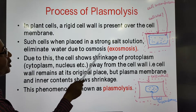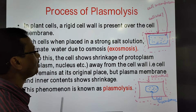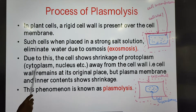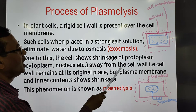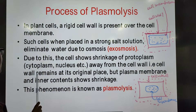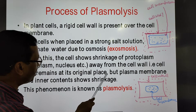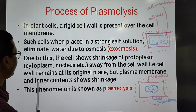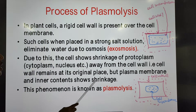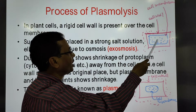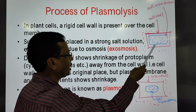Due to this, the cell shows shrinkage of the protoplasm — which includes cytoplasm, nucleus, etc. — away from the cell wall. The cell wall remains at its original place, but the plasma membrane and inner contents show shrinkage. This happens as soon as the cell is placed in a hypertonic solution.